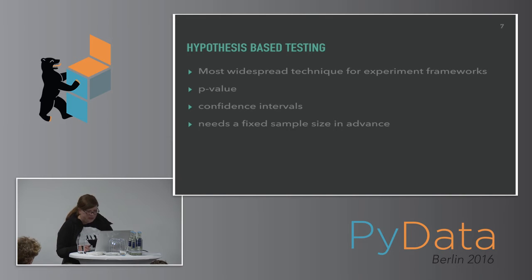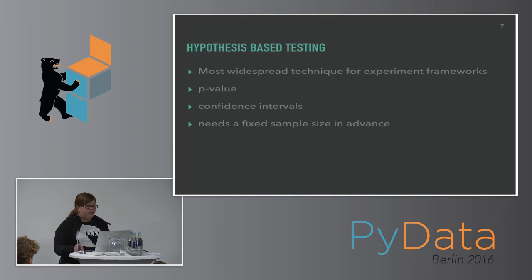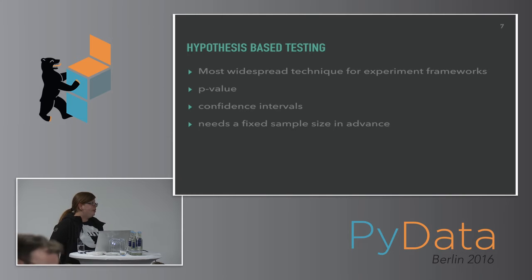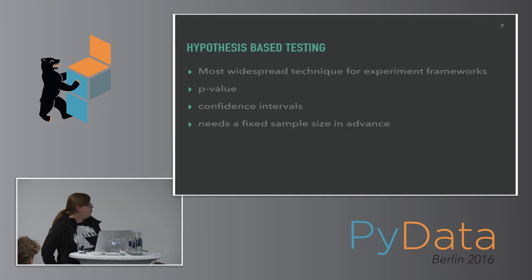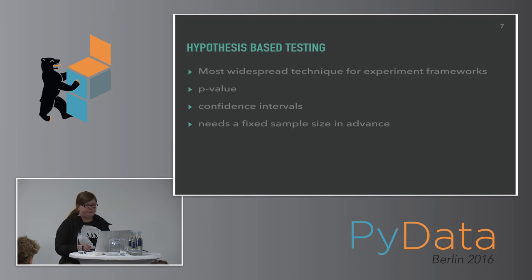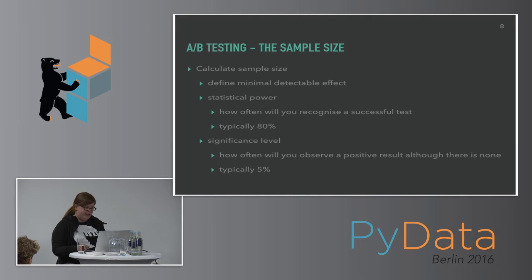Most AB experiment frameworks use hypothesis-based testing to call a winning variant or to analyze your experiments — that's the most widespread technique. We calculate a so-called p-value to see if there is a significant difference between two versions. We also measure confidence intervals. But to work with hypothesis-based approaches, we actually need to set up a fixed sample size in advance in the most simple setup.